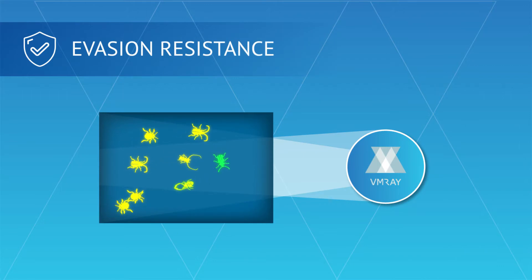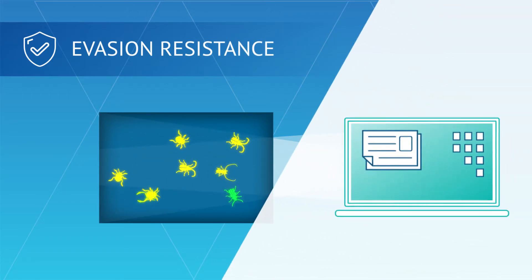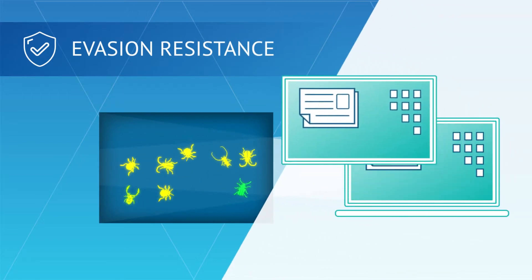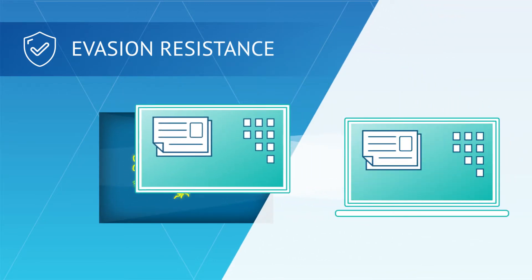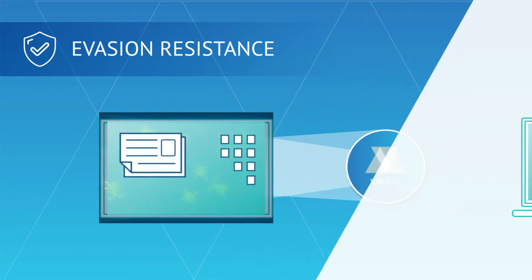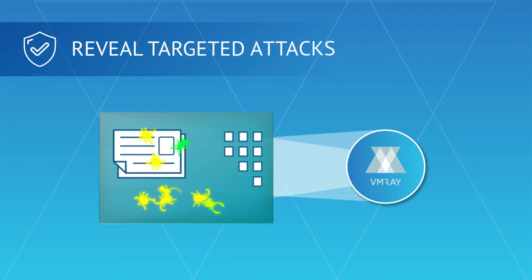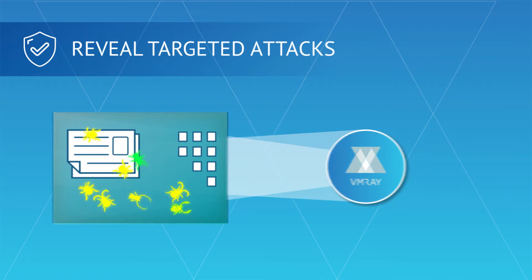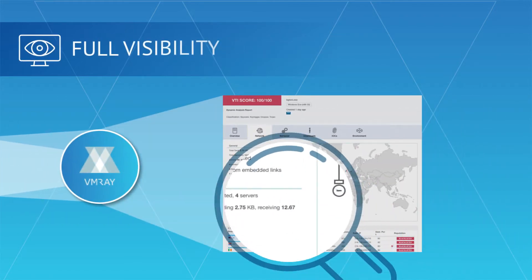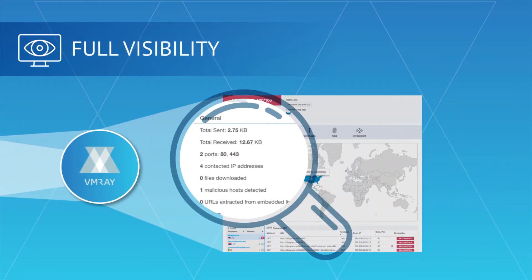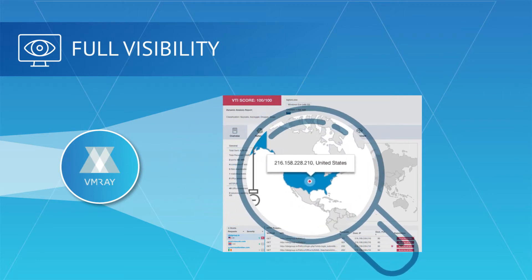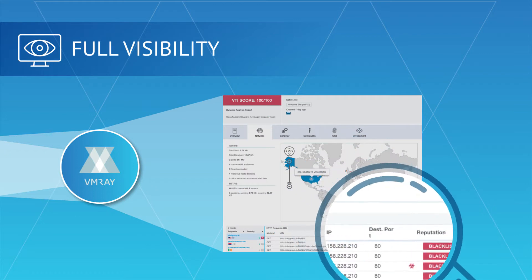This makes VMRay completely invisible to malware, providing unmatched evasion resistance. Our hypervisor-based approach enables security teams to analyze samples using gold images of their production systems, revealing targeted attacks. VMRay also provides full visibility into malware behavior, transparently monitoring and logging every malware interaction so you don't miss any critical information.